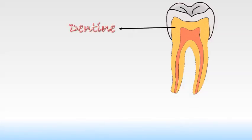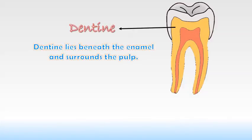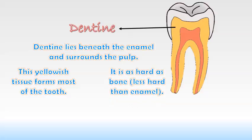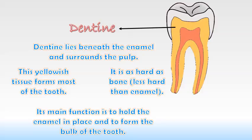Dentine lies beneath the enamel and surrounds the pulp. This yellowish tissue forms most of the tooth. It is as hard as bone but less hard than enamel. Its main function is to hold the enamel in place and to form the bulk of the tooth.